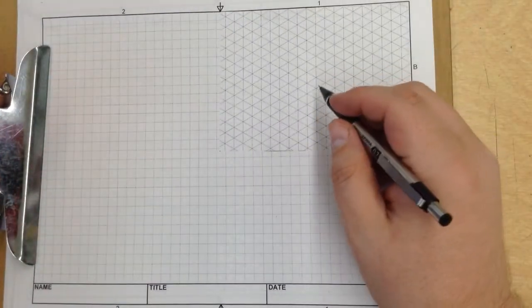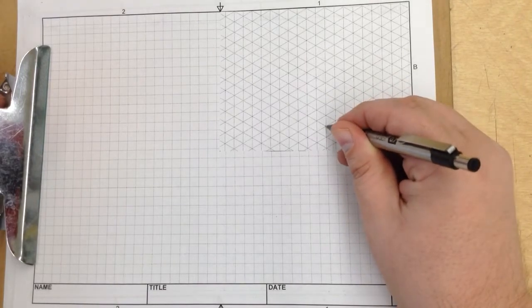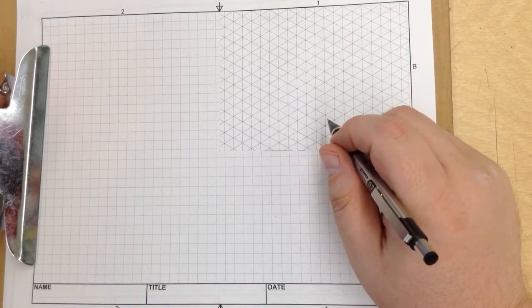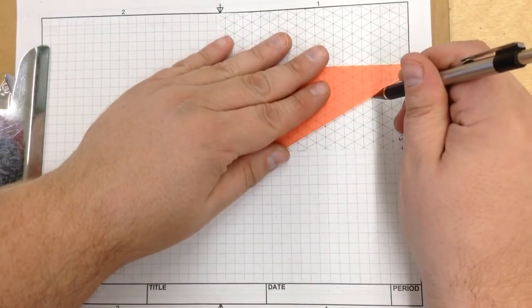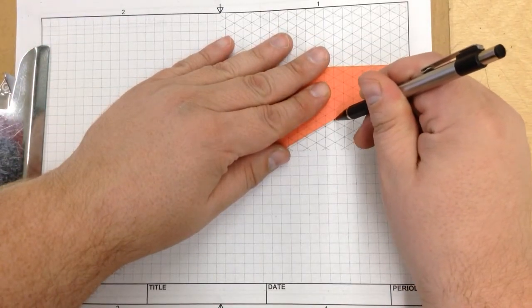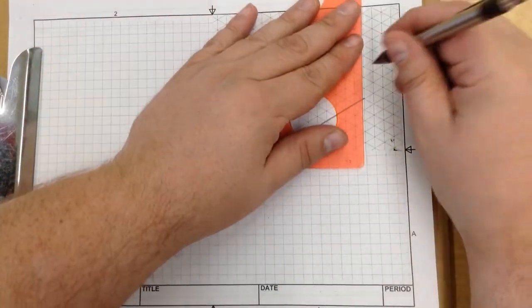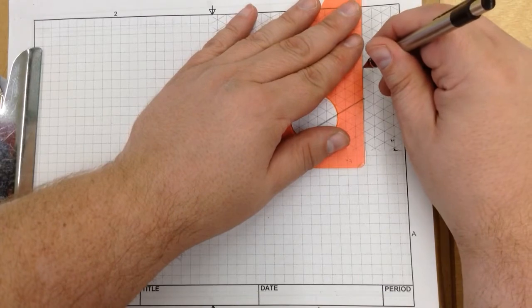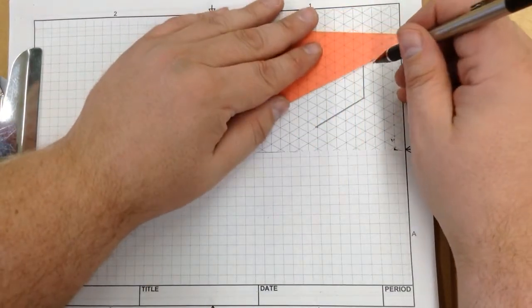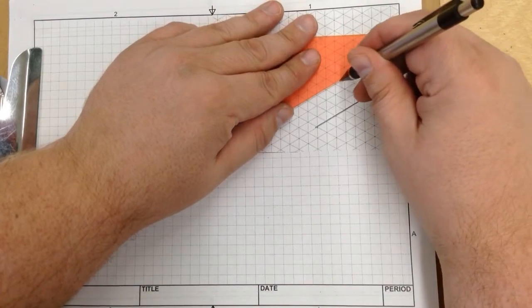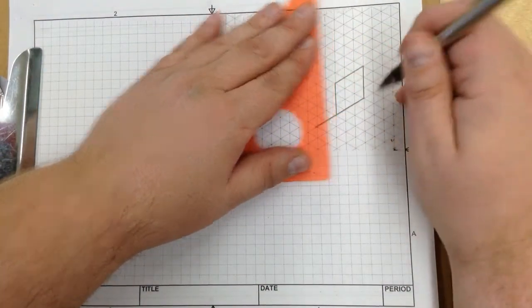I am going to begin with my point of origin, which I am going to put right there. This object is 5 units wide, so I have my initial line, then it is 3 units tall. This feature is 3 units, I should say. Then it is 3 units wide, then just down from there.